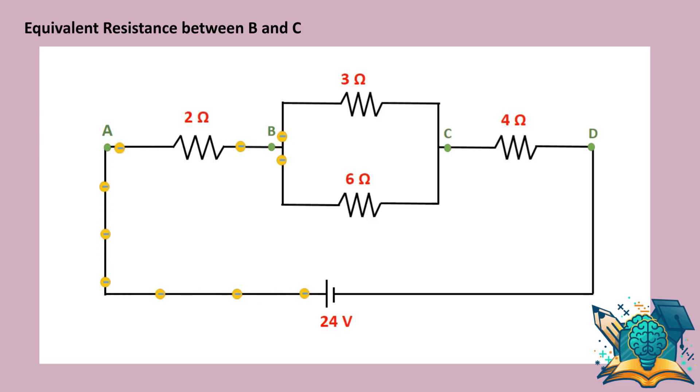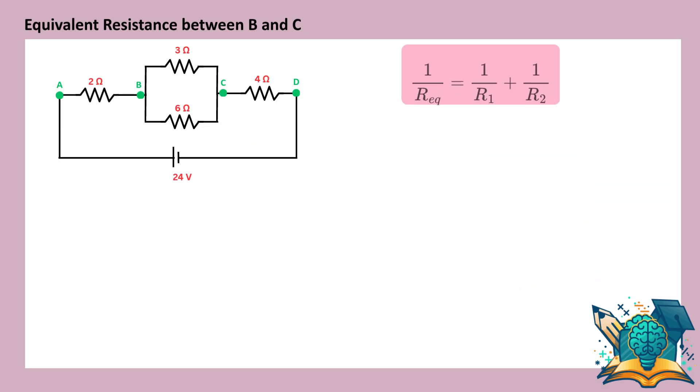First, we find the equivalent resistance between points B and C. The entire current that comes to point B splits into two paths. Since the current divides between the 3 ohm and 6 ohm resistors, they are connected in parallel. Now, substituting the values into the formula, we get the answer 2 ohms.